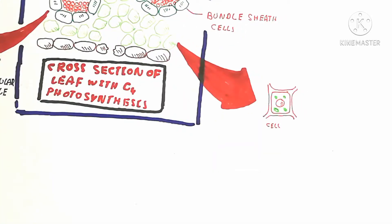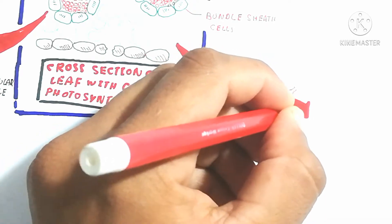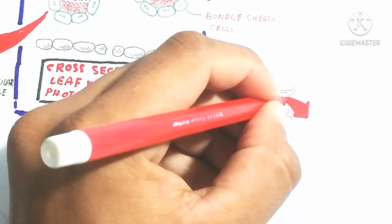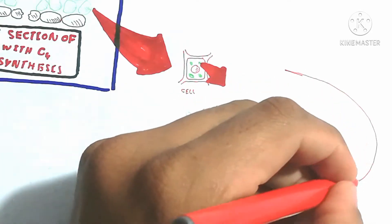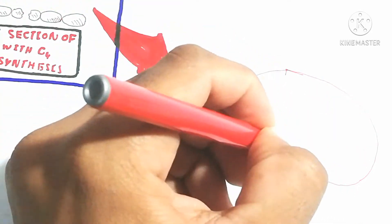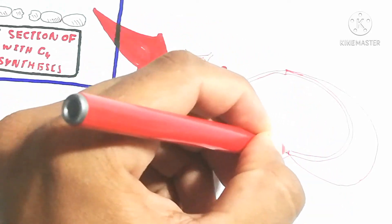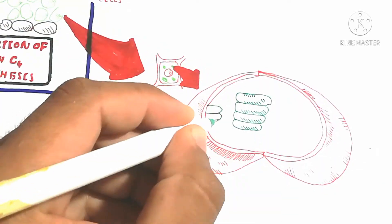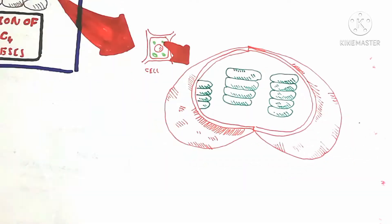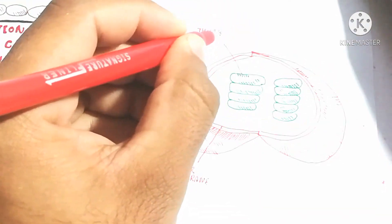The mesophyll cell contains chloroplasts. The chloroplast has no oxygenase or carboxylase activity in the absence of RuBisCO. It means in the absence of RuBisCO there is no Calvin cycle, but the light-dependent reaction does still occur in the mesophyll chloroplasts.